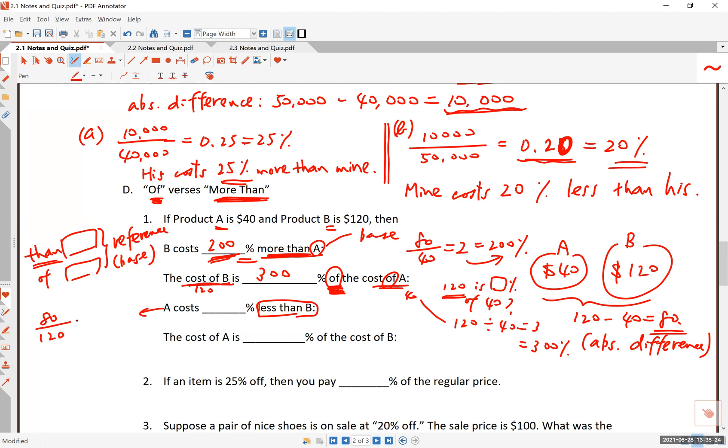And in this case, you get 0.666, blah, blah, blah. And that, the six repeats, and that's 66.7%. Or you can round this off to 67% if you like. I am not going to be picky. I am not going to be picky about that. It costs 66.7% less than B. Did you get that? A costs 66% less than B, because 80 divided by 120 is, well, 0.666 repeating.